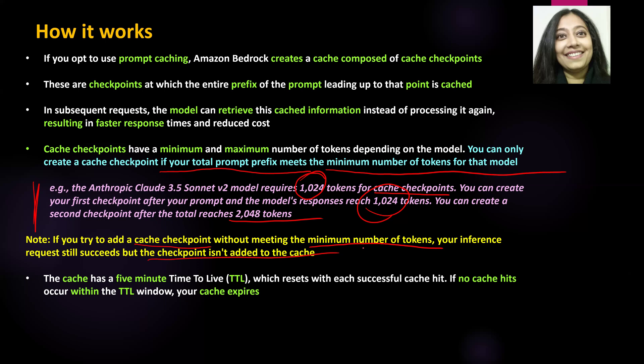Every time you create a checkpoint and add it to the cache, it has a certain time to live. The typical time to live is five minutes, during which it resets itself with each successful cache hit — meaning a user has requested that particular prompt and the model retrieved the inference from cache. If there are no cache hits within the time to live window, your cache will expire.